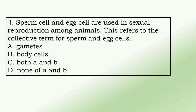4. Sperm cell and egg cell are used in sexual reproduction among animals. This refers to the collective term for sperm and egg cells. a. gametes, b. body cells, c. both a and b, d. none of a and b.